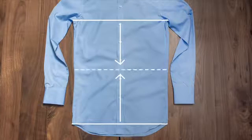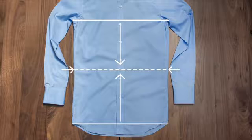Find the narrowest part of the shirt's body. This is usually halfway between the armpits and the bottom of the shirt.